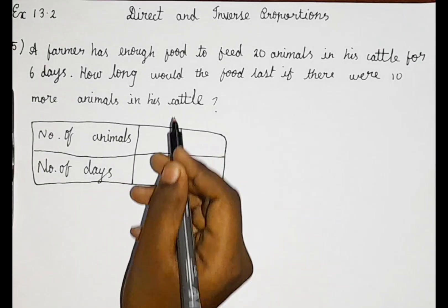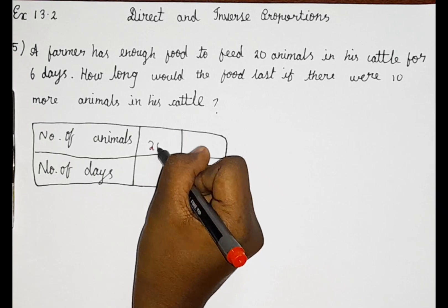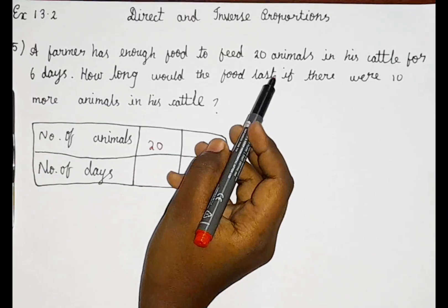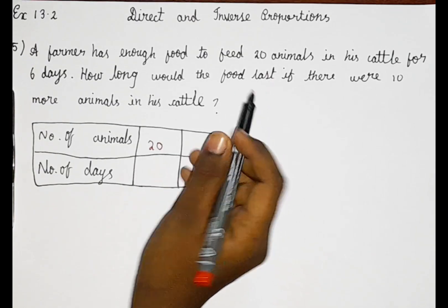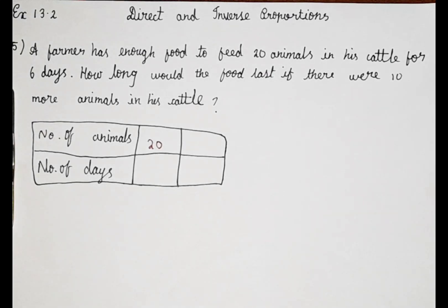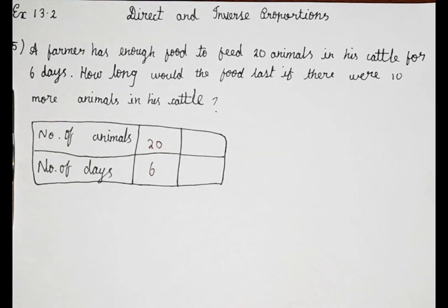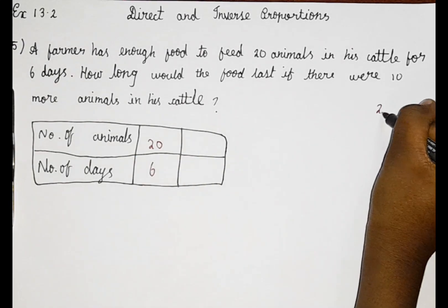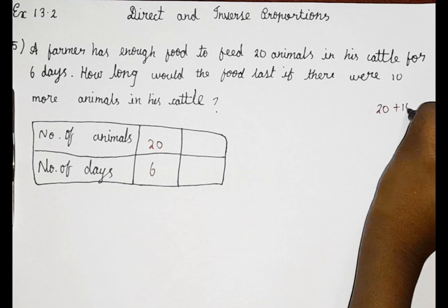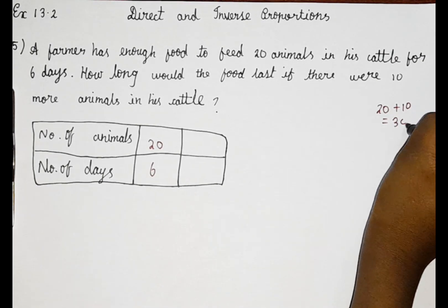The question says that the total number of animals is 20. For 20 animals, he has some amount of food, which will last for 6 days. The question is, if 10 more animals are added, that is 20 plus 10 which equals 30 animals.